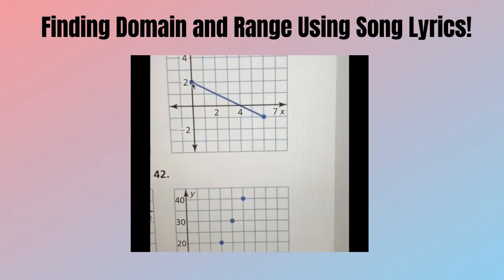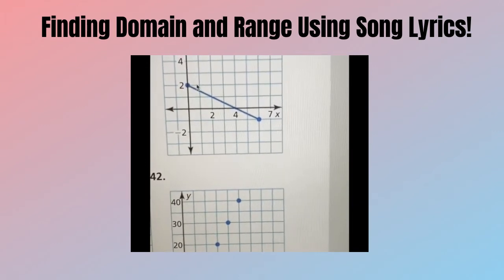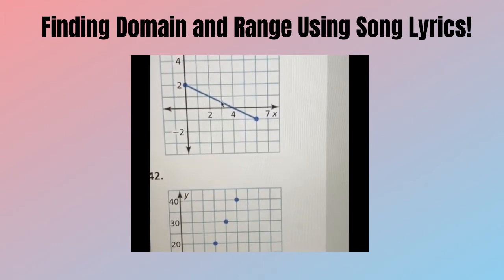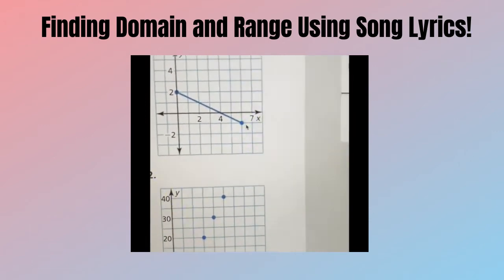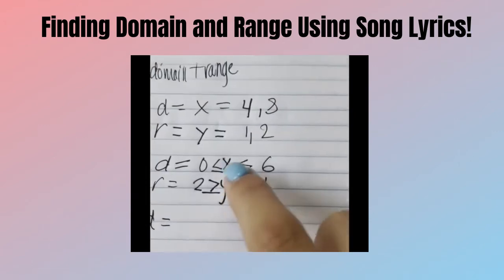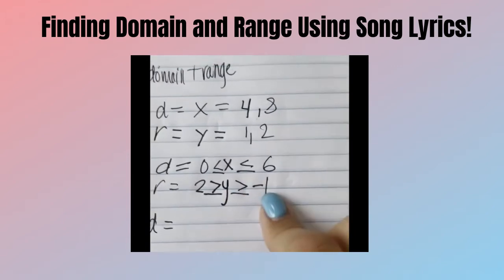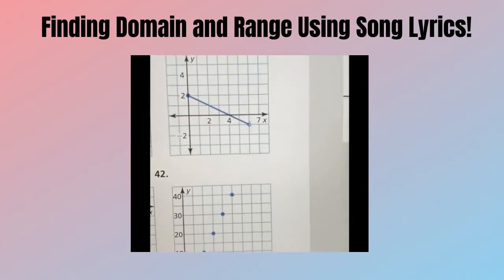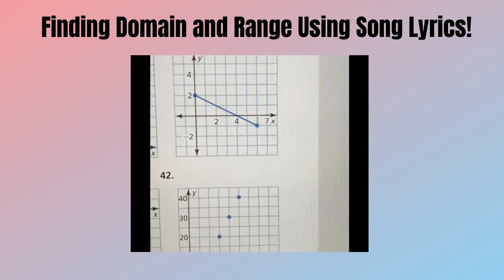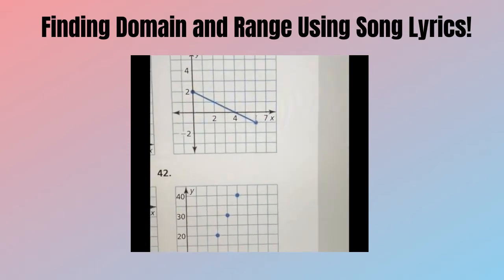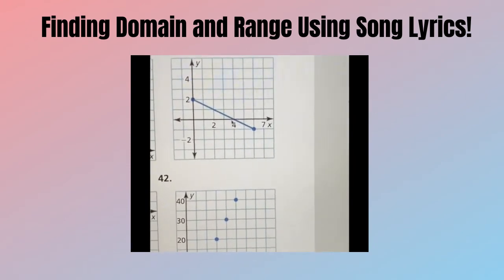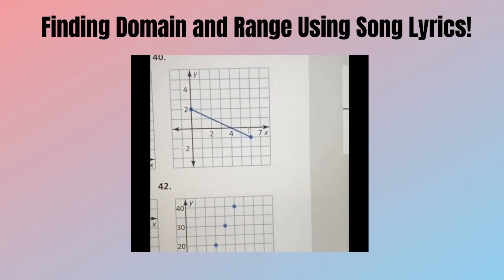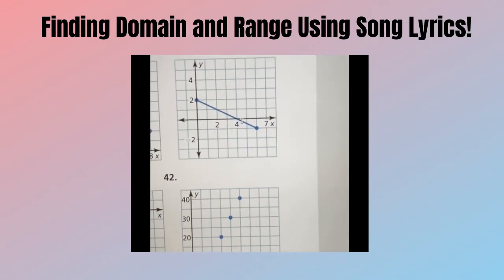So this is 0, right? It could be 1, 2, 3, 4, 5, and so on. And then I knew that x has to be less than or equal to 6 because the x value for 6 is right here and it has to be less than or equal to 6, meaning that it could be anything over here. So that's how I used the song for the domain.